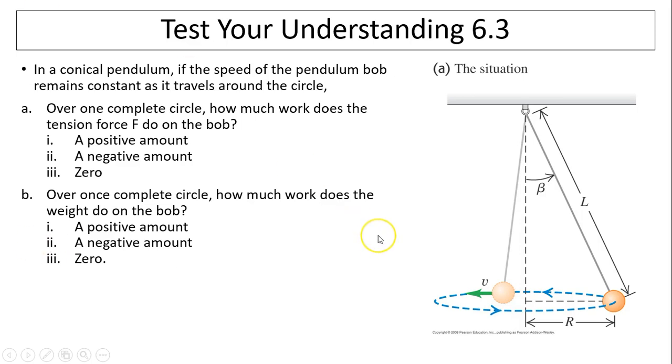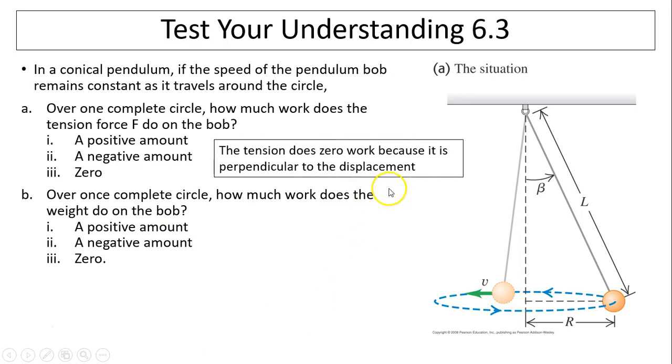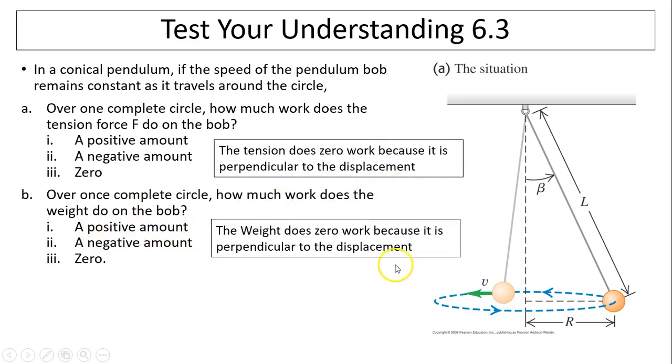Last question, test your understanding. Here is a conical pendulum. If the speed of the pendulum bob remains constant as it travels around the circle, over one complete circle, how much work does the tension do? Is it zero? How much work does the weight do? Also zero. Because both tension and weight are perpendicular to displacement. That's it for today. Thanks for watching. See you next time.